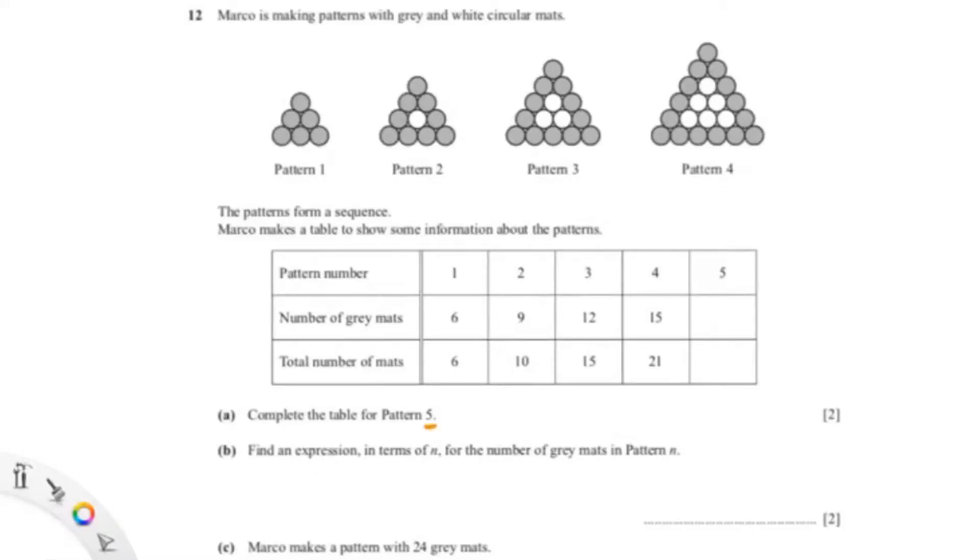So our first question is asking us to find the pattern for column 5. I went ahead and found a common difference by subtracting 9 from 6. For this I did the same thing, so 10 minus 6 is 4, 15 minus 10 is 5, and so on and so on.